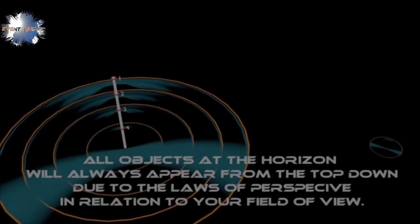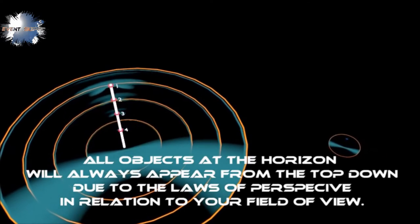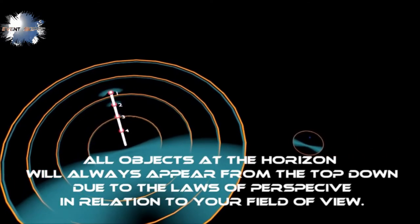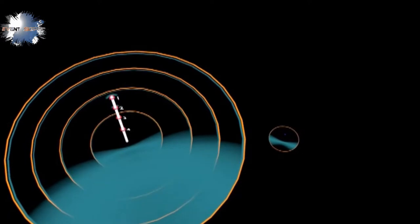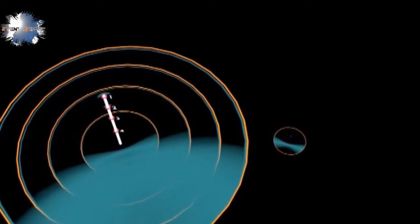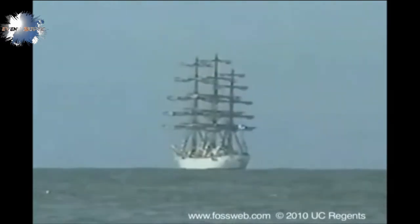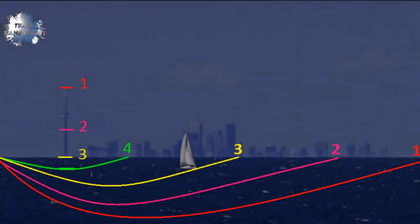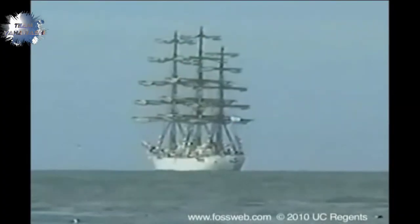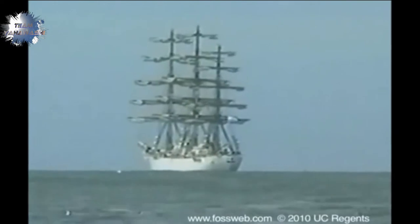All objects at the horizon will always appear from the top down due to the laws of perspective in relation to your field of view. Likewise, as a ship sails away from your stationary field of view, it will appear to disappear from the bottom up, the very same way stationary buildings appear from the top down when you're the object that's moving.